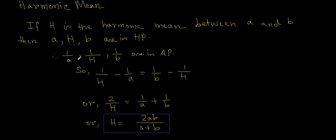Similarly we can write these are in AP and we can equate them by their common difference and obtain the harmonic mean as 2AB by A plus B. So this is the harmonic mean.